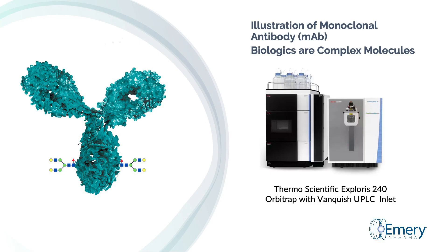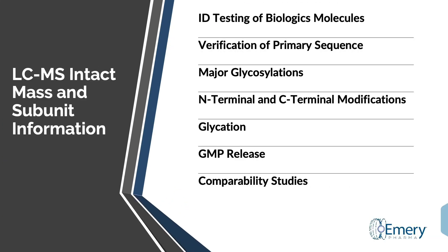Indeed, the consistency of drug production is supported by the consistency of intact mass results throughout the project lifetime. The information obtained from the LC-MS intact mass analysis includes verification of the primary sequence, major glycosylations, N- and C-terminal modifications, glycation, GMP release, characterization, and comparability studies.